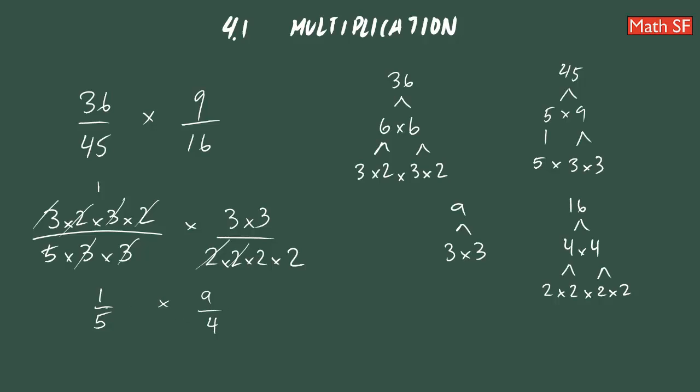Therefore, we straight multiply 1 times 9 is 9 and 5 times 4 is 20. So when it comes to fractions, we multiply straight. Okay? But before multiplying straight across, we must check if we can simplify them. So our job will get done easily.